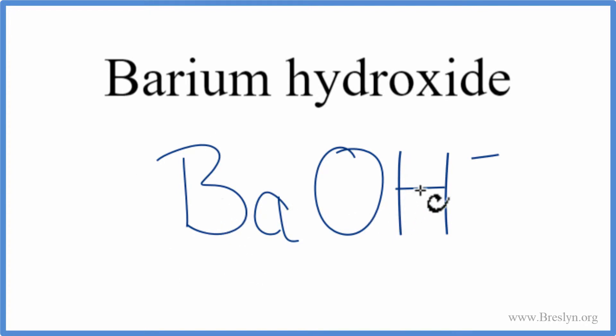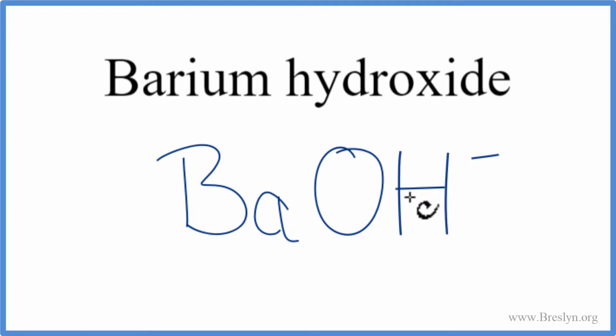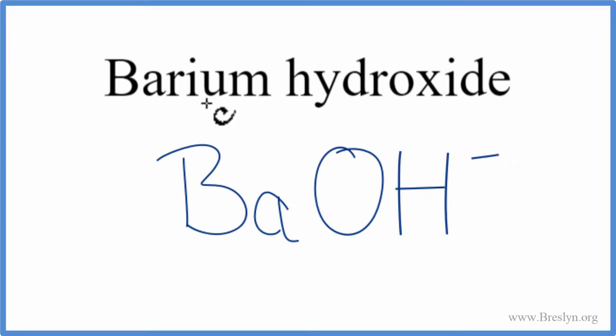Barium is a metal, and OH, the hydroxide, is a nonmetal. We have a metal and nonmetals, so we have an ionic compound, and we need to take the charges into account when we write the formula for barium hydroxide.